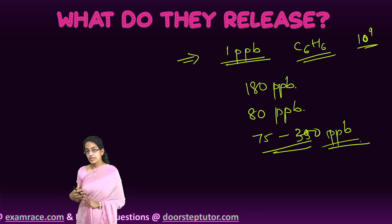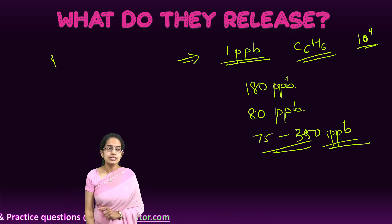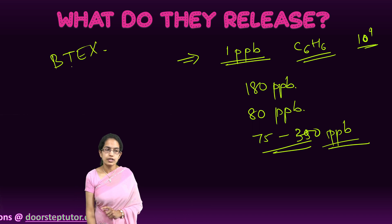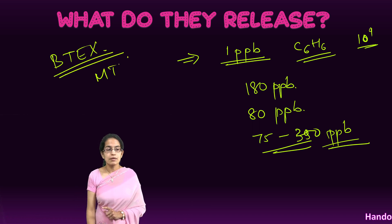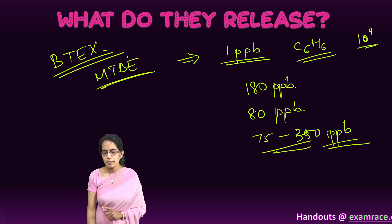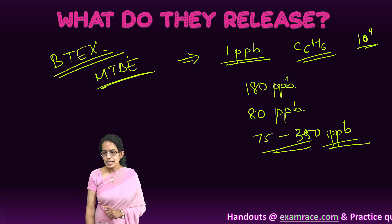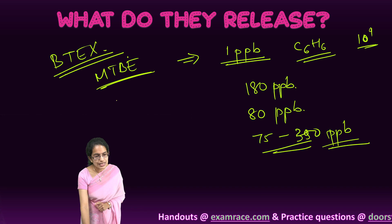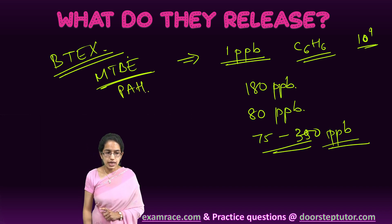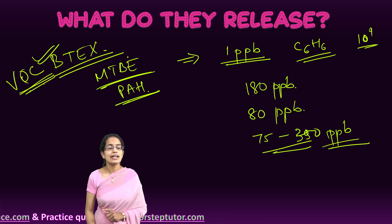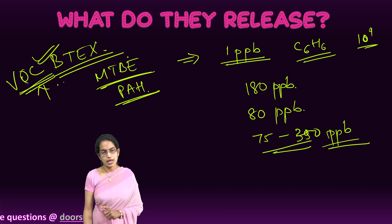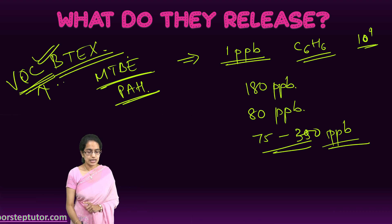Along with it, it's not just the BTX compounds that are released by the oil refineries, but there are other compounds as well. For example, MTBE is one of the most common compounds that is seen. Besides that, there are the polycyclic aromatic hydrocarbons. BTX is VOC, that is volatile organic compound, and has all the properties of volatile organic compound, which we have covered in a separate lecture.